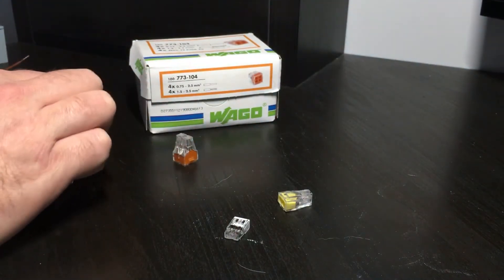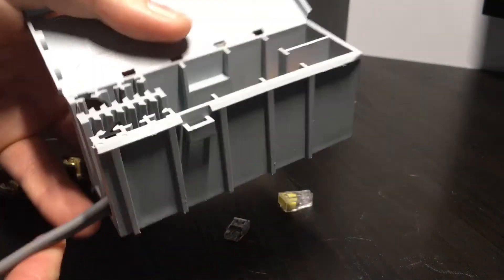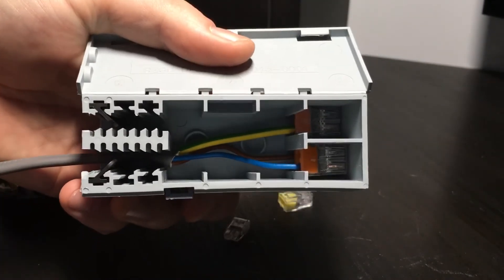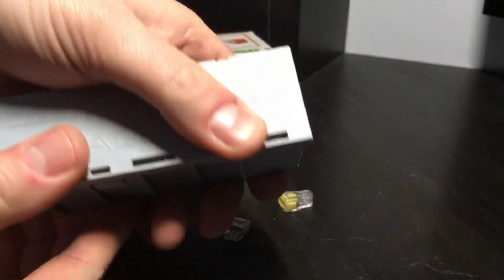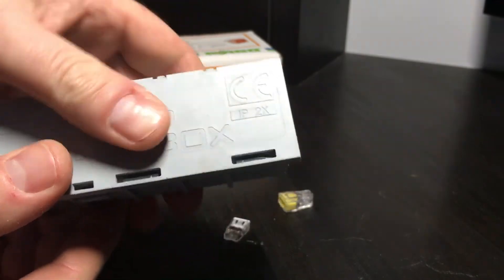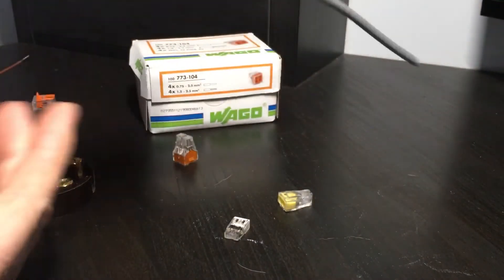Now also to accompany that, they do the WAGO box, which is an enclosure, and it also offers strain relief. As we can see here, the cables are terminated inside. In this case, I've used one millimeter cable twin and earth, and you simply snap the lid shut when you're done. It provides IP2X from the enclosure itself.